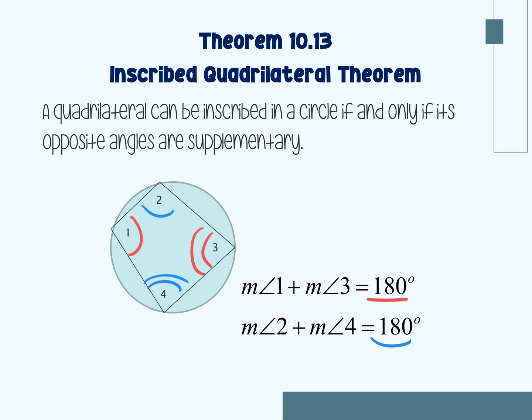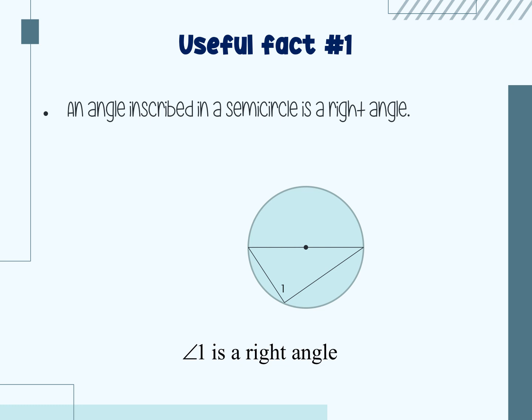The next slide has a useful fact, piggybacking off of the inscribed right triangle theorem. Useful fact number one: an angle inscribed in a semicircle is a right angle. In this picture, angle one is a right angle because it is inscribed in this semicircle. Its intercepted arc is 180 — it's a semicircle arc. The angle forming that intercepted arc is going to be half of 180, so angle one is 90 degrees.